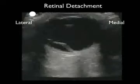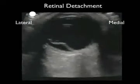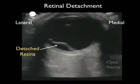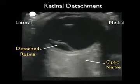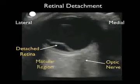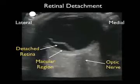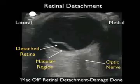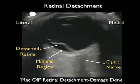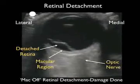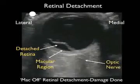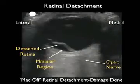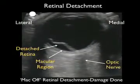Here's an ultrasound from another patient with non-traumatic loss of vision showing the classic appearance of retinal detachment. The probe is in a transverse orientation with the probe marker oriented lateral. We can see the optic nerve sheath coming up from the posterior aspect, with the detached retina emanating off from the optic nerve. Since the macula lies just lateral to the optic nerve, this detachment has affected the macula — classified as a mac-off or macular-off retinal detachment.